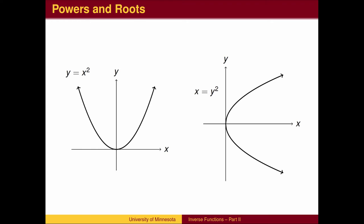Certain functions are not one-to-one, so we must restrict the domain to a portion of the graph that is one-to-one to find an inverse.